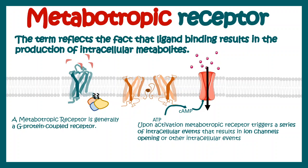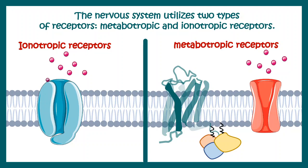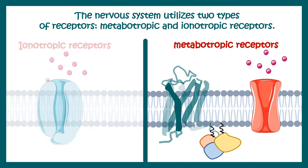In this video we will try to understand the mode of action of metabotropic receptors and where we can find them. One common place where we can find metabotropic receptors is our nervous system. In the nervous system there are two types of receptors: ionotropic receptors and metabotropic receptors. In this video we'll focus on metabotropic receptors and their mode of action.